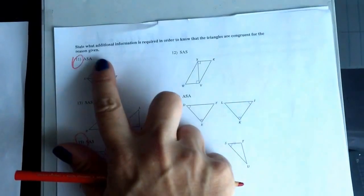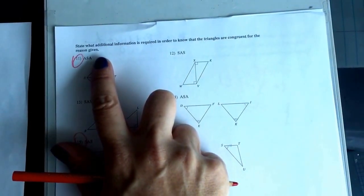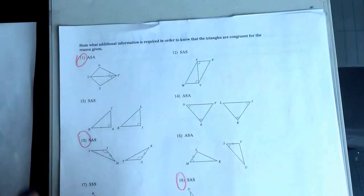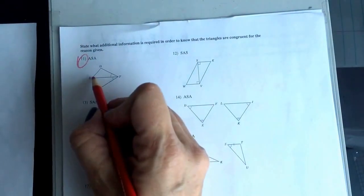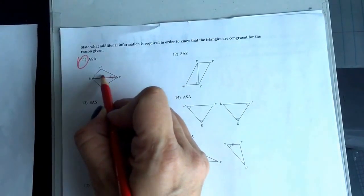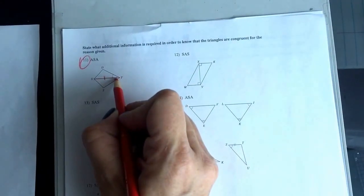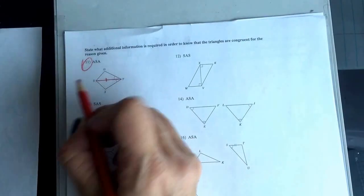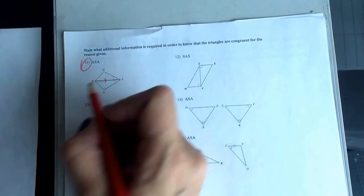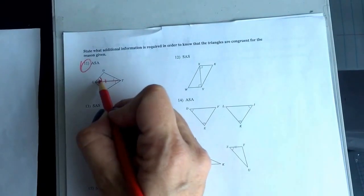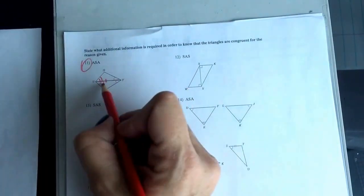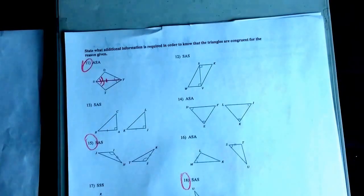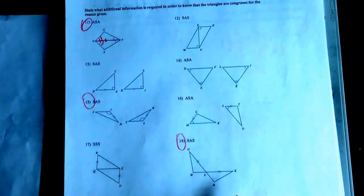They were asking what additional information is required in order to know that the triangles are congruent for the given reason. So this one, I have to have an ASA. You've got to look at the drawing and you've got to see what you already have. What I see is that I've got a pair of angles, I have this side congruence, and I need the included side in it. So for ASA to happen, I'm just gonna mark that I need these two angles to be congruent to each other. That's what I would need for ASA, and I honestly am very happy with just having the markings on the drawings.